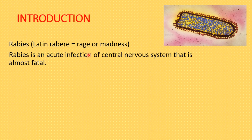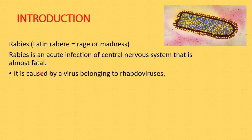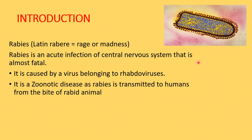As you can see, it is a bullet-shaped virus. The word 'rabies' is derived from a Latin word 'rabere,' meaning rage or madness. Rabies is an acute infection of the central nervous system that is almost always fatal — once the infection reaches its peak, it leads to death. It is caused by a virus belonging to the family Rhabdoviridae, and it is a zoonotic disease transmitted to humans from the bite of a rabid animal.